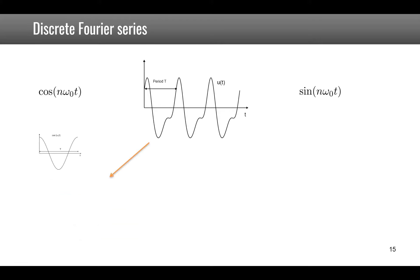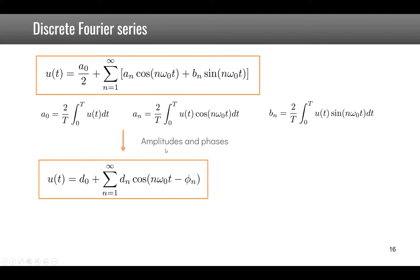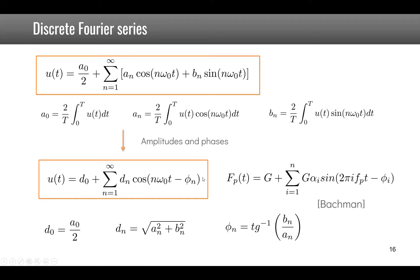Any signal can be seen as an infinite sum of cosines and sines at the fundamental frequency and its multiples. The coefficients a₀, aₙ, and bₙ are given by integrals: a₀ = (2/T)∫u(t)dt; aₙ involves cos(nω₀t); bₙ involves sin(nω₀t). Using trigonometry, a sum of cosine and sine can be written as a cosine with a certain phase. This notation matches that found in Bachmann for footbridge excitation by pedestrians.